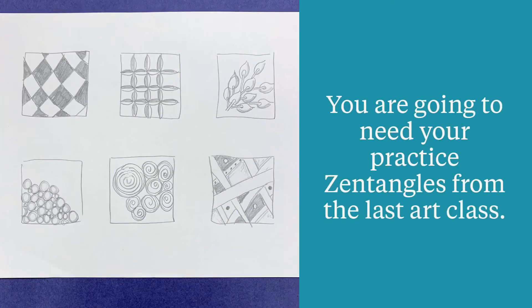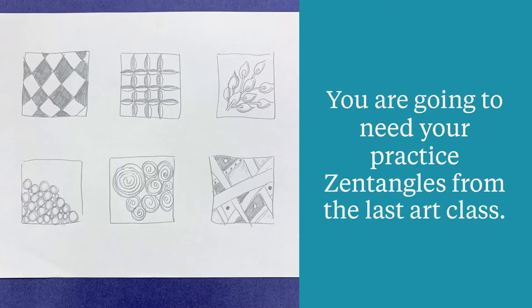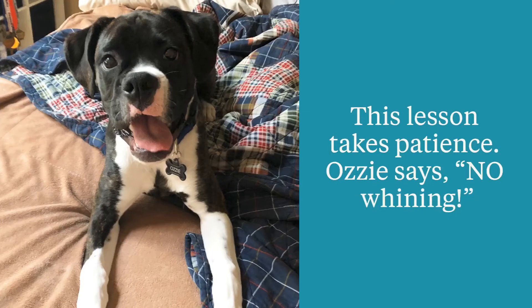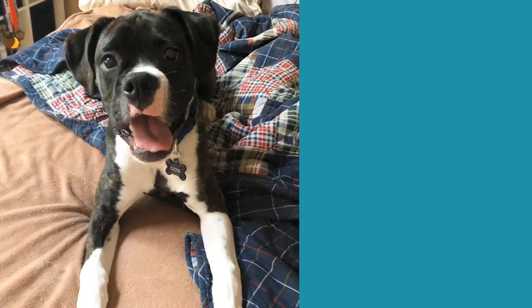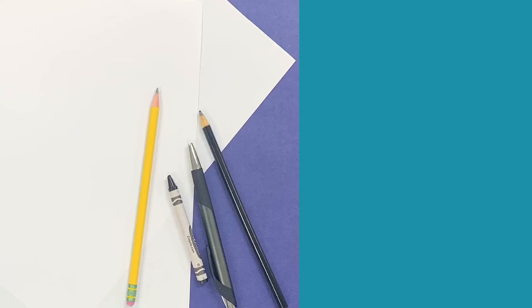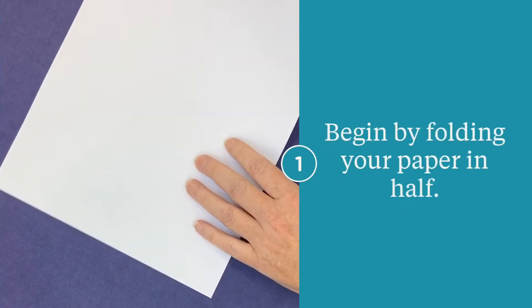For today's lesson, you are going to need the zentangle examples that we did last time. This lesson is tough. Ozzy says there will be no whining. You are going to need a piece of paper, a pencil, and either an ink pen or a black colored pencil or a black crayon.